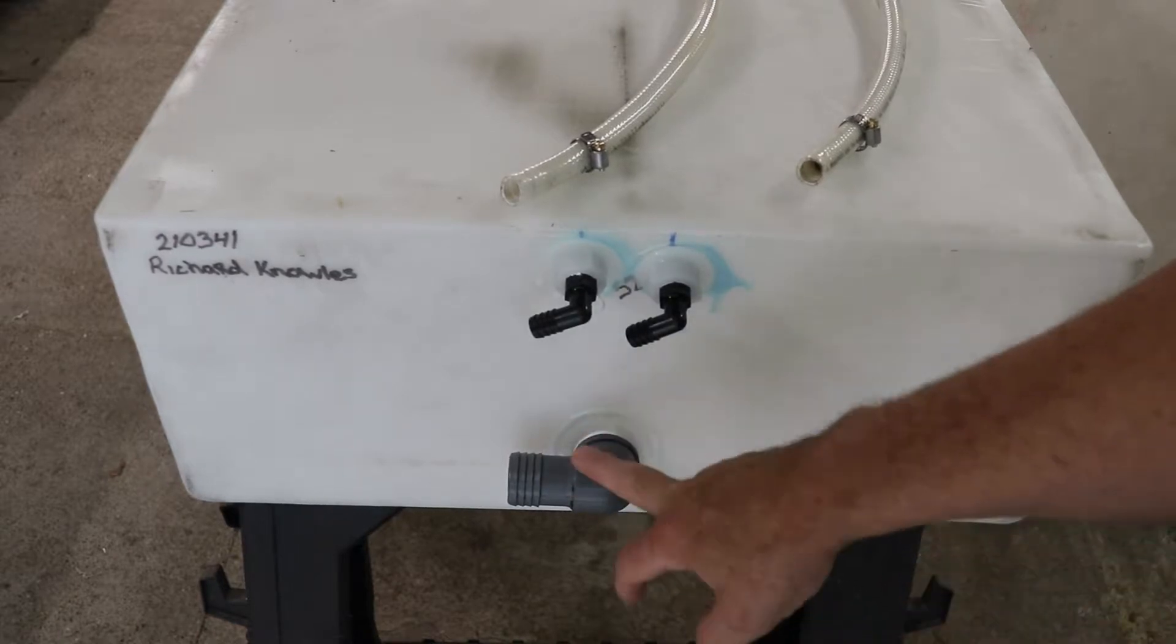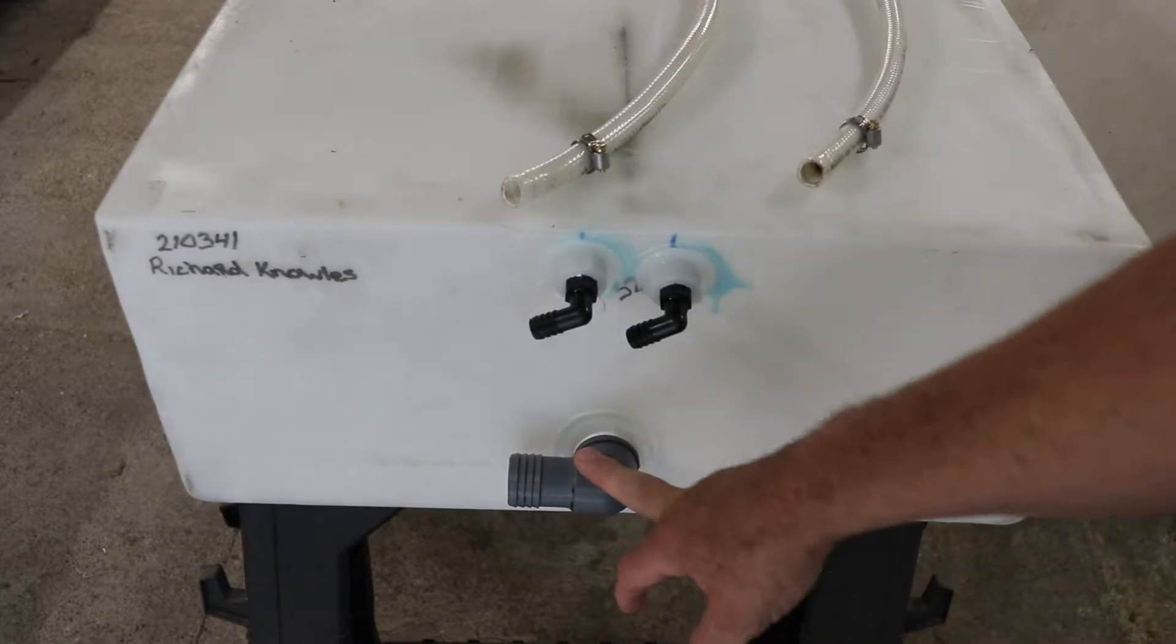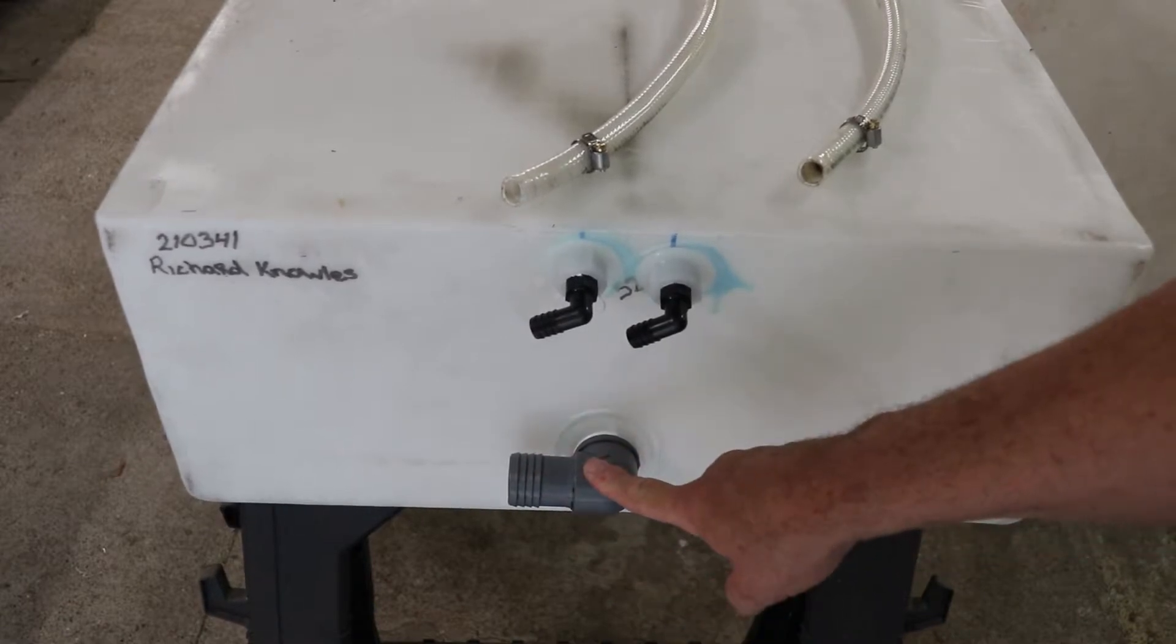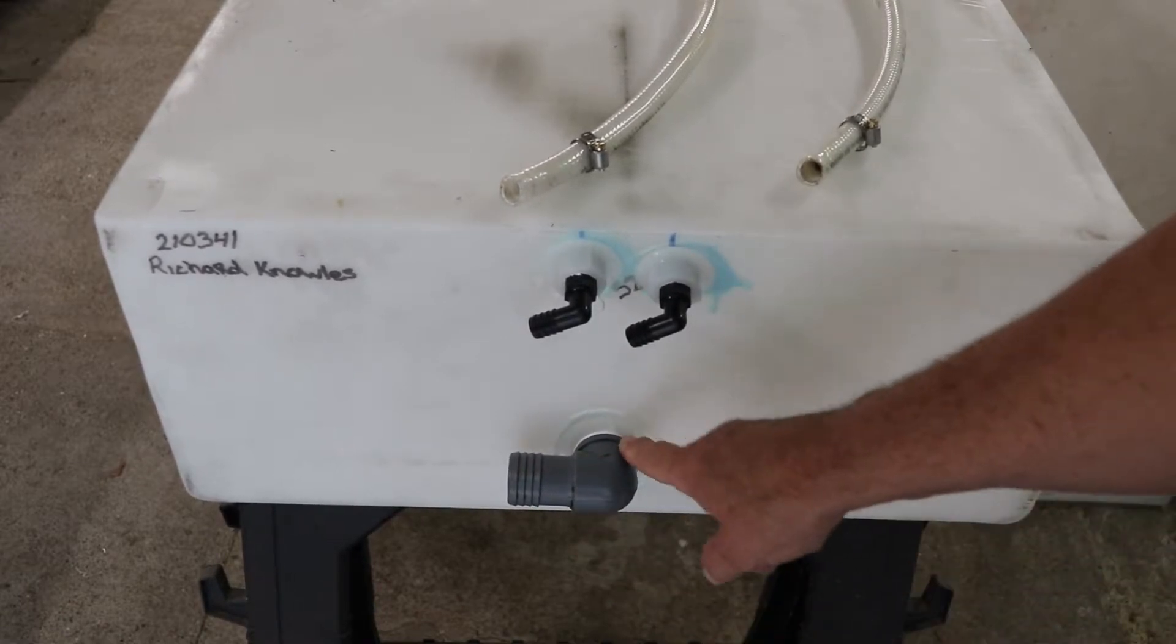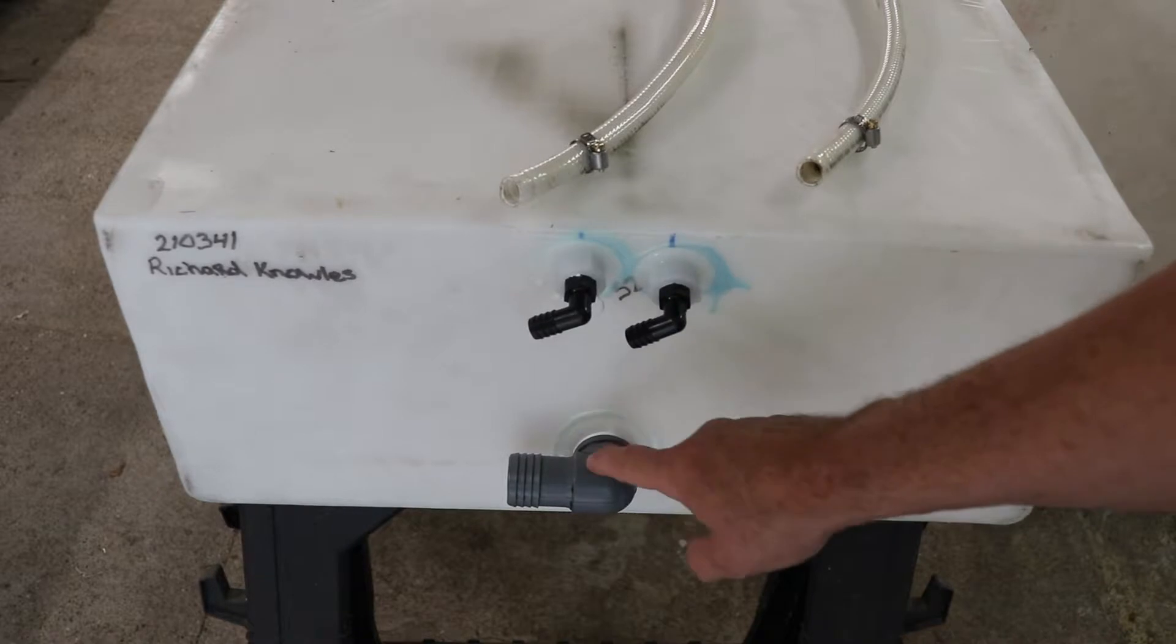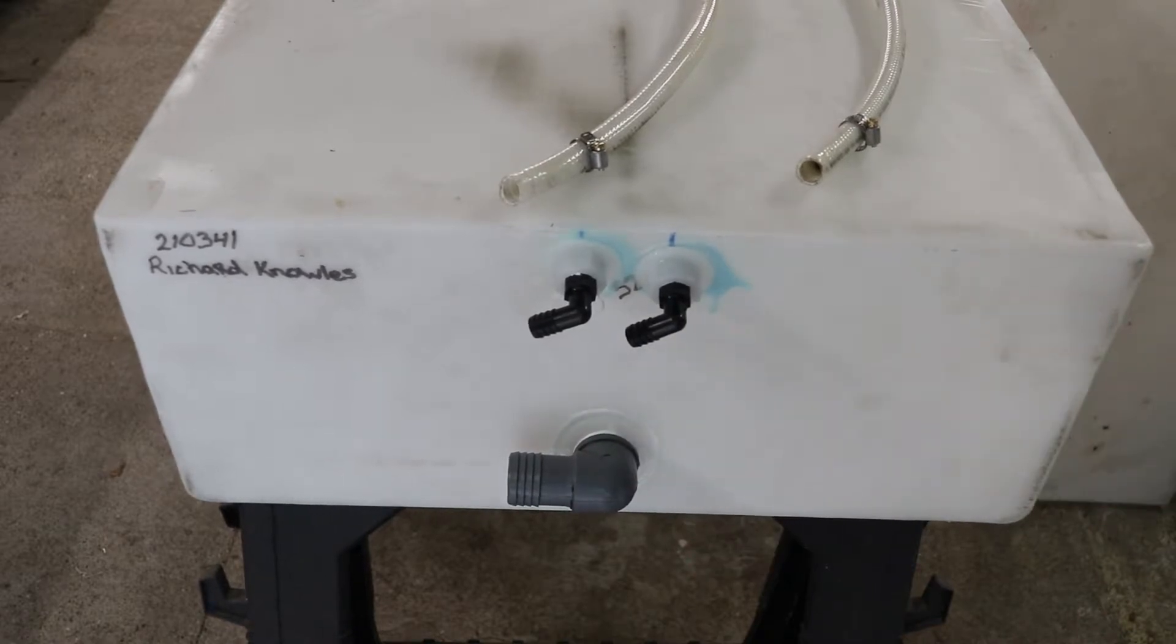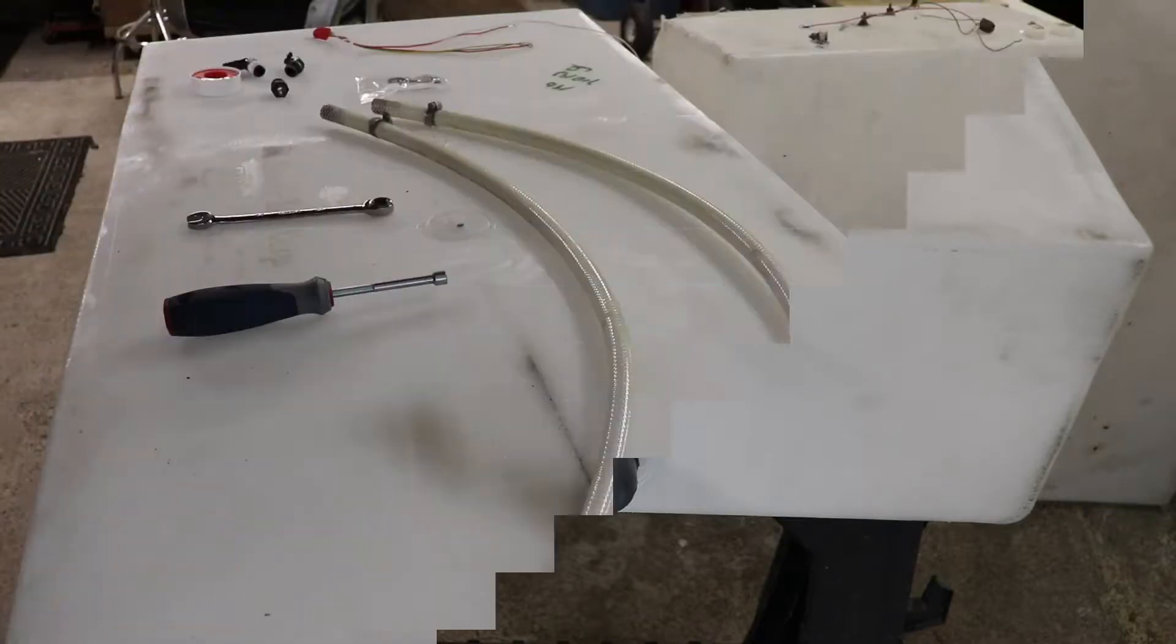After that I installed the major water line connector, doing again the same sort of thing. This one was the original which I was able to salvage. I just cleaned up the threads and then rewrapped it with thread tape.